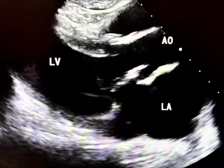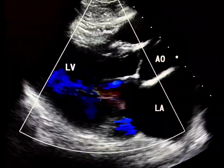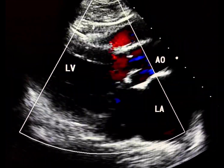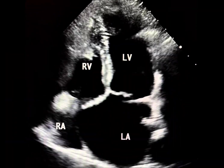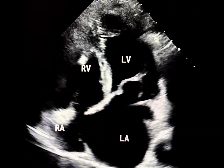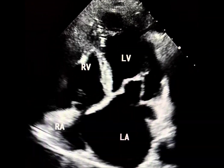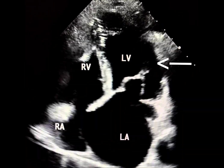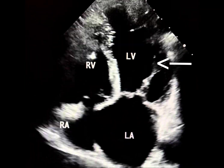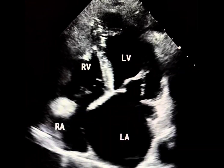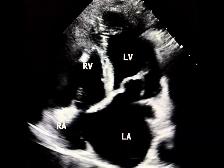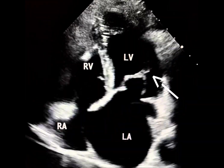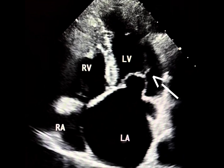Look at this parasternal long axis view. The mitral valve appears domed and stenotic. This is a parachute mitral valve disease. This congenital malformation occurs when all the chordae tendineae insert into a single papillary muscle, typically the posteromedial one. The hallmark echocardiographic feature is the convergence of all the chordae tendineae towards a single papillary muscle.